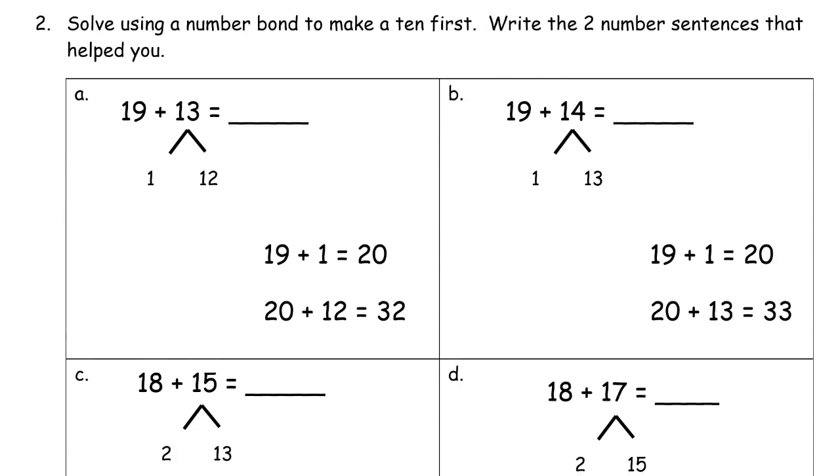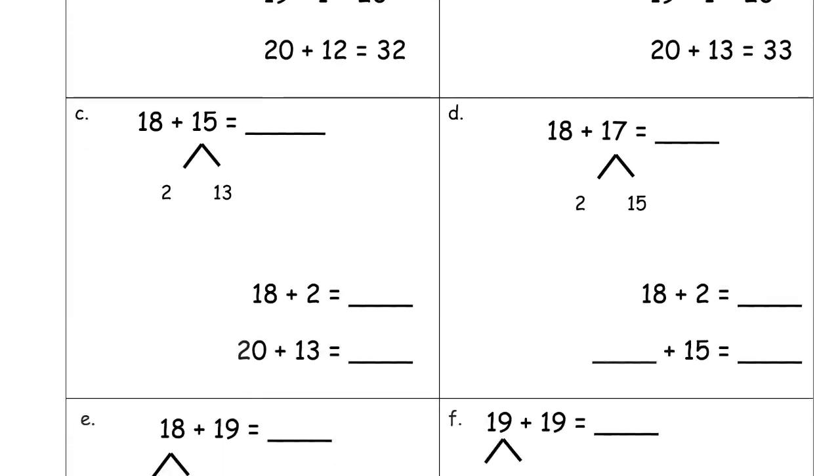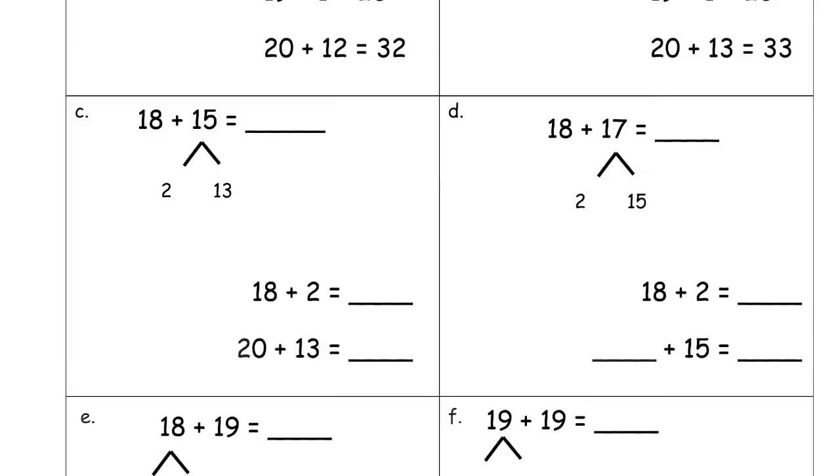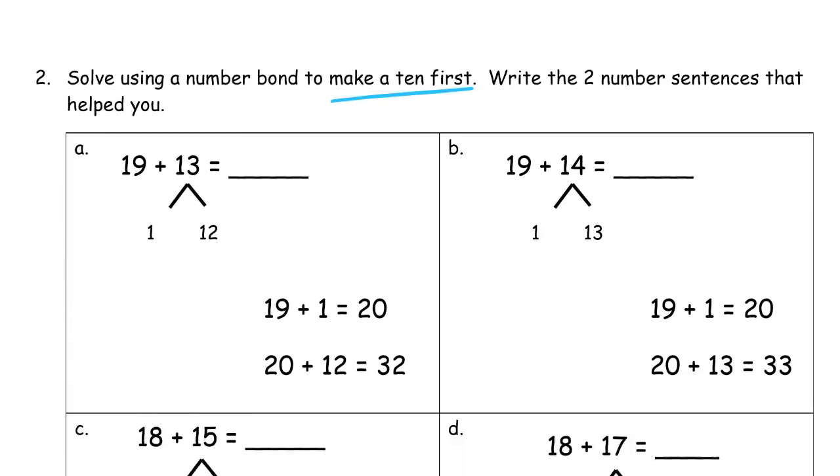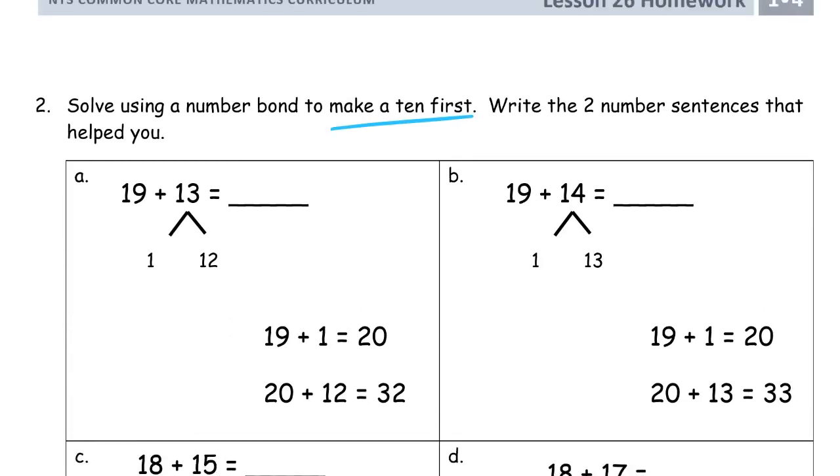Now we're solving using a number bond to make a 10 first. A little bit different. We're looking to make a 10, and then add the rest to it. So, it looks like the number bonds have already been figured out for us, and we just have to write in the number sentences, and we have the first two examples.